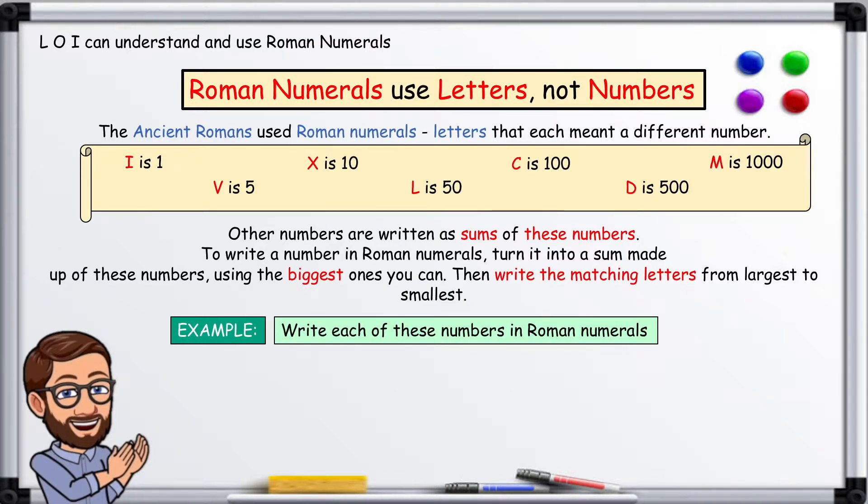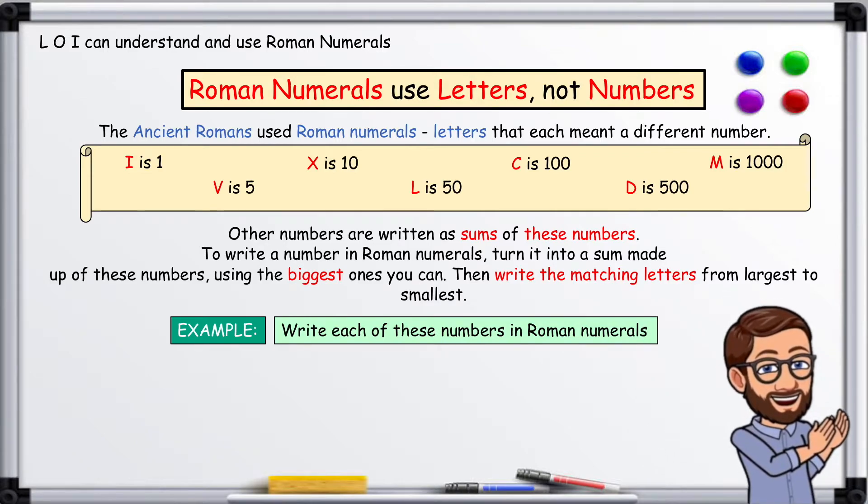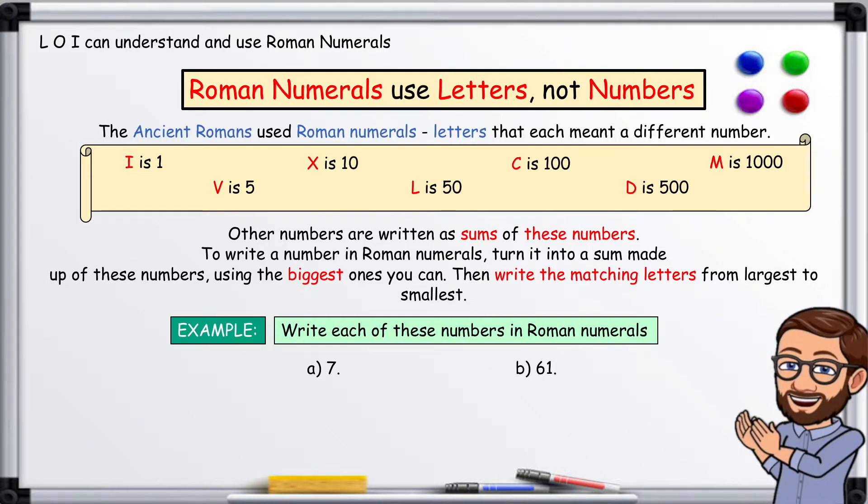Example, write each of these numbers in Roman numerals. A, 7. B, 61.